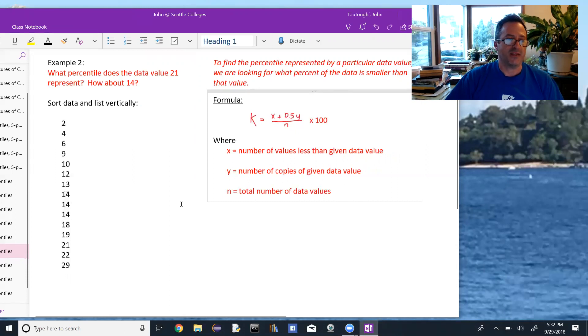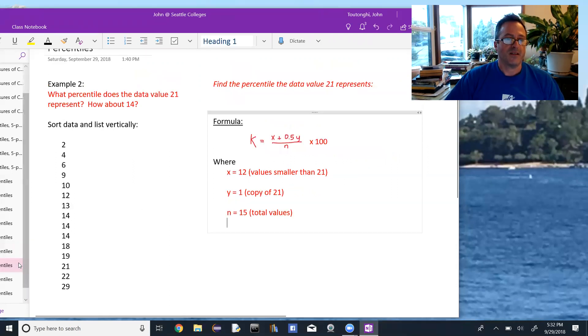So in our example, the percentile that the data value 21 represents, again, our data is sorted and listed vertically. And I need to figure out, to use this formula, what x, y, and n are. So x, the number of values smaller than 21, is 12. You can just count them, 1, 2, 3, 4, 5, 6, 7, 8, 9, 10, 11, 12. Y, we only have one copy of 21. So y is just 1. And the number of values that we have is 15, again.